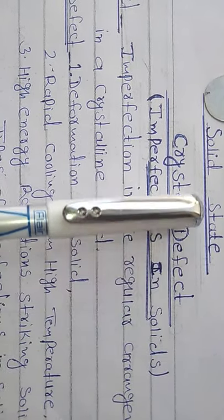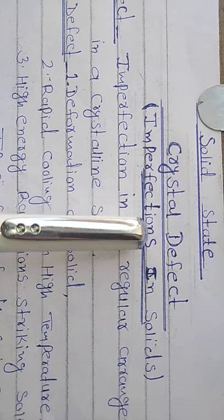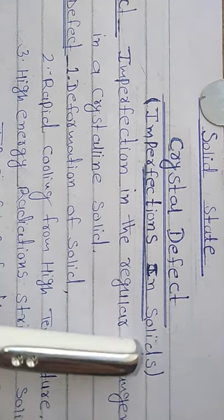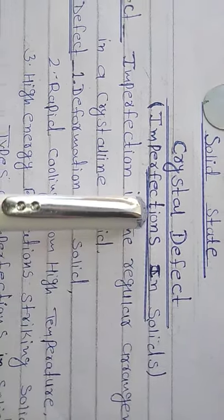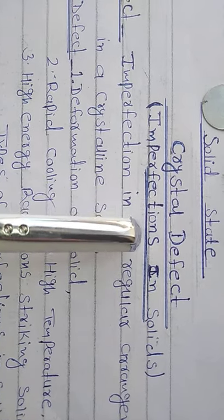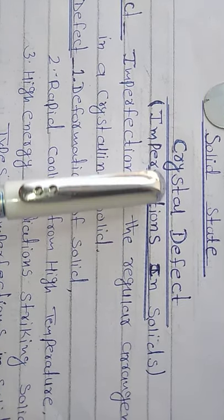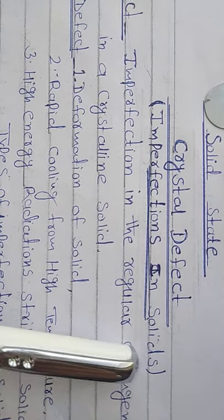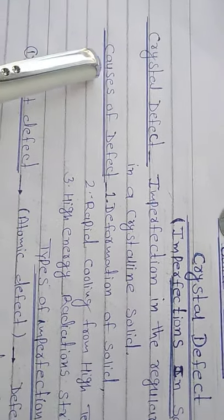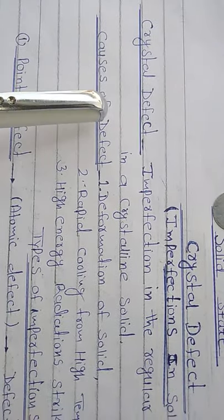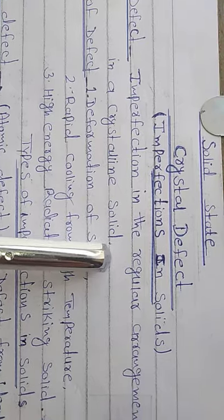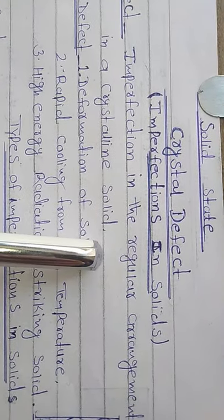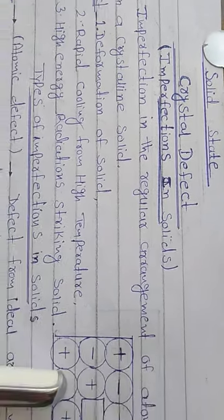We know that a crystal is a regular arrangement over a long range, and if there is a disturbance or defect, then we name it crystal defect or imperfection in solids. The clear definition is: any imperfection in the regular arrangement of atoms in a crystalline solid is known as a crystal defect.